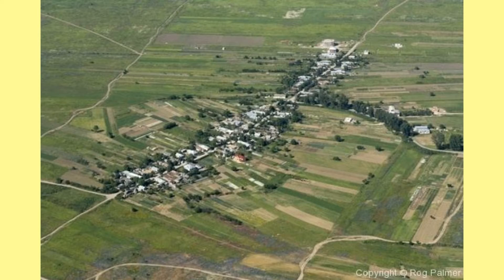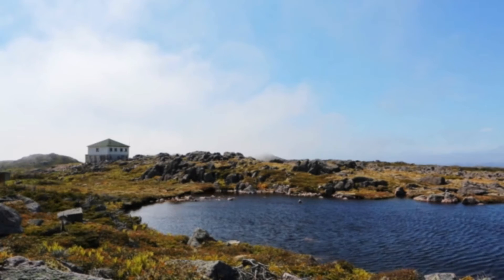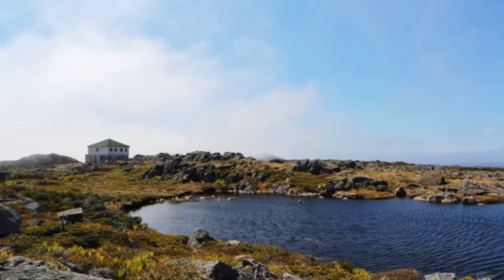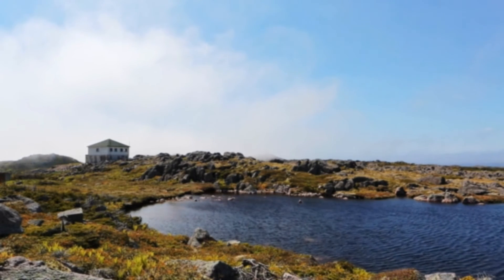Linear settlement, also known as ribbon development or chain village, is long and thin. The buildings are arranged in lines, often next to a lake or river, or following a road.